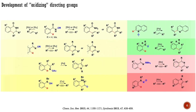The main representatives of oxidizing directing groups are presented here, with most of them based on derivatives of hydroxylamine, where the nitrogen-oxygen bond is responsible for the oxidation of the catalyst during the catalytic cycle. Additionally, it has been recently discovered that N-oxides and derivatives of hydrazine may also act as oxidizing directing groups.